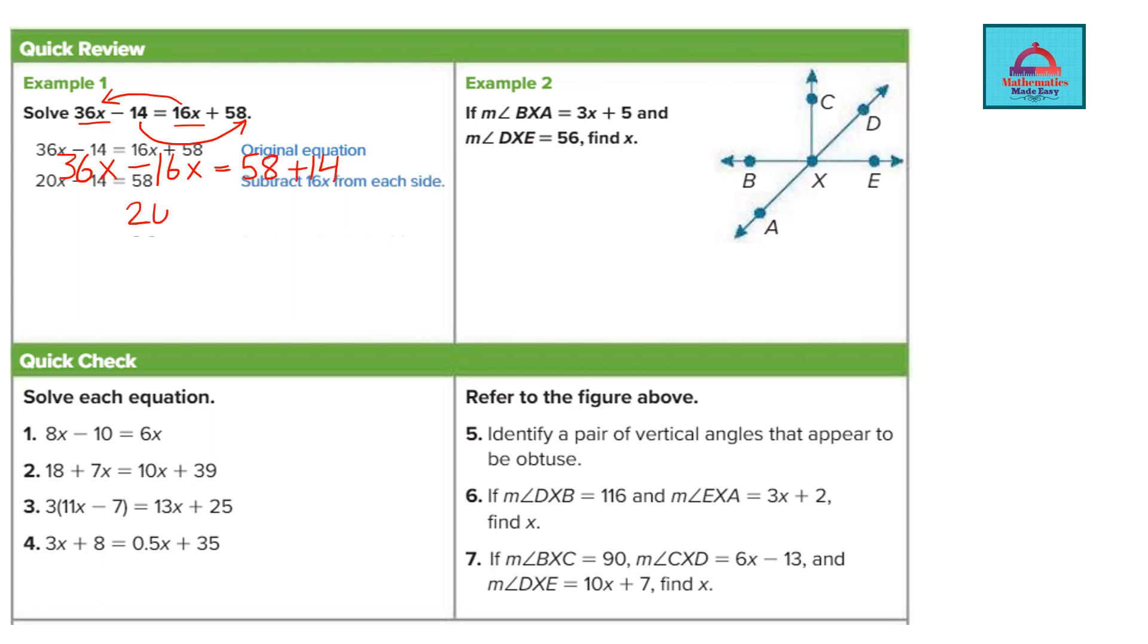So this gives you 20x on subtraction and it also gives you 72 here. So x is going to be 72 divided by 20. We can simplify this and get our answer. So this is going to be 36 over 10. I have divided by 2 so this is going to be 3.6.